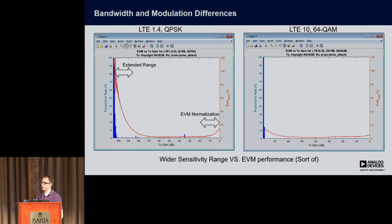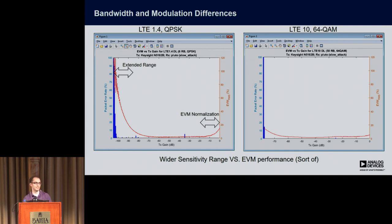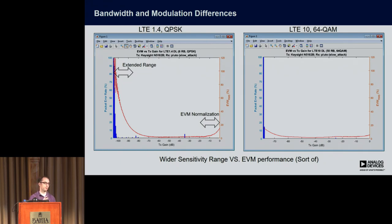Let's first look at bandwidth and modulation. LTE 1.4 MHz and LTE 10 MHz with different modulations — 64-QAM and QPSK. You'll see that you have this range extension just because it's an easier modulation scheme to decode — you're getting an extra 30 dB of recoverable range. What's interesting is at the higher gains, you get this normalization effect with EVM that I talked about: 64-QAM actually does better at higher gain, which is a kind of weird anomaly. If you look at LTE 10 alone at 64-QAM and shift the frequency from the low end at 100 MHz to the high end at 5.8 GHz, you'll see an actual shift in the EVM curves. The reason is that attenuation is greater at higher frequencies.